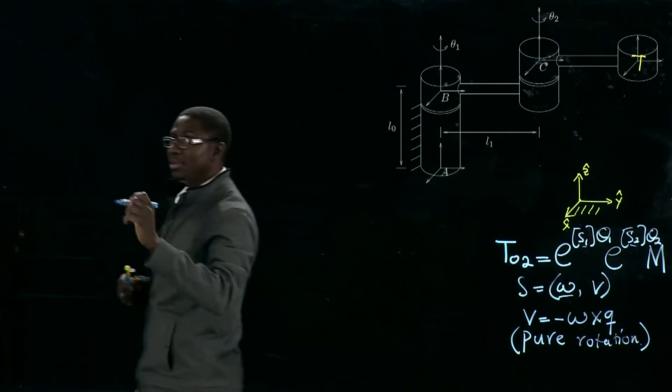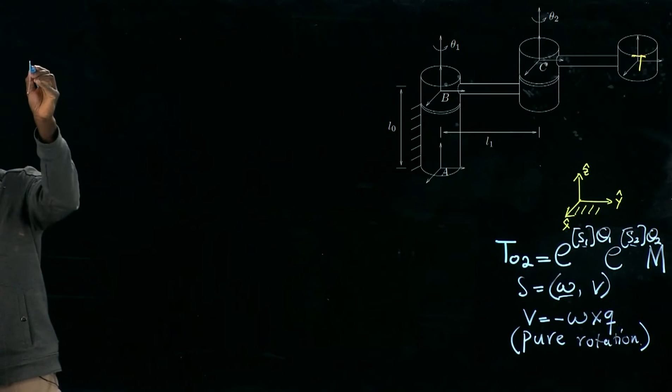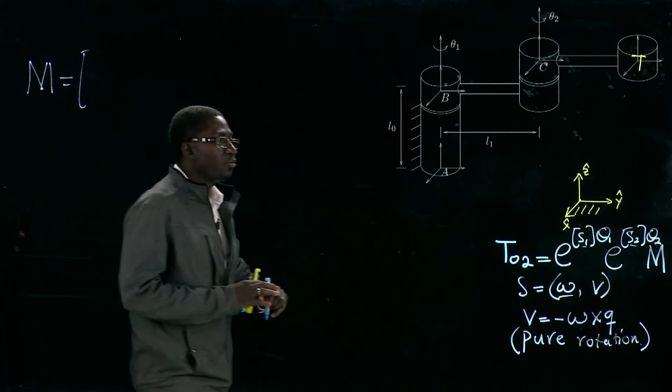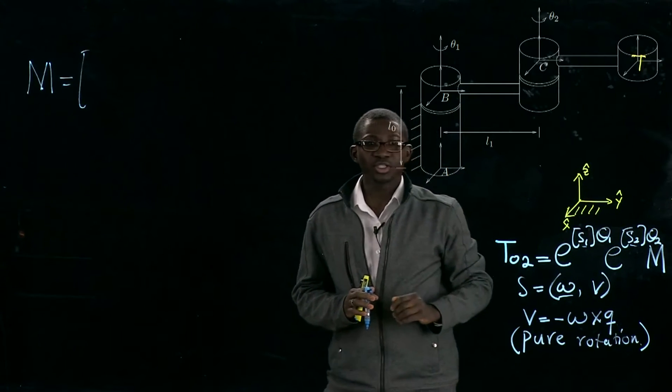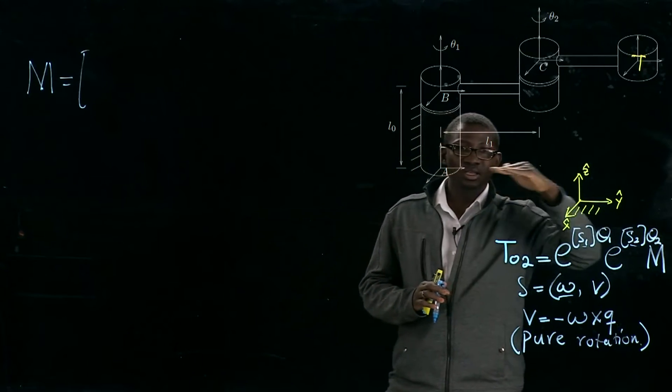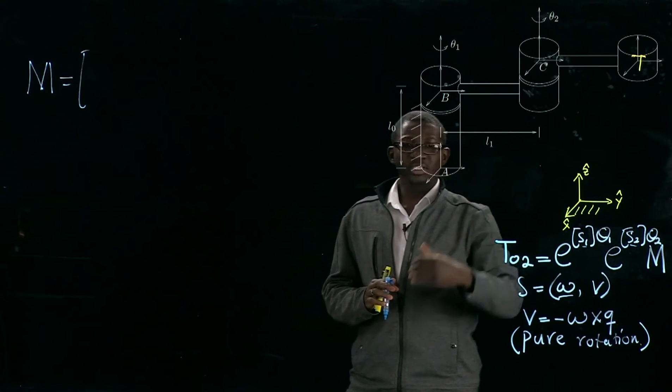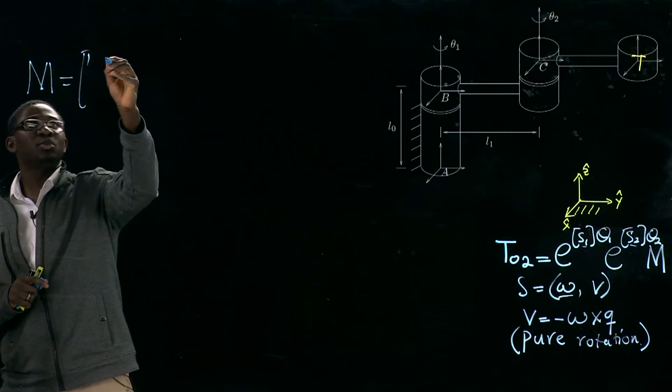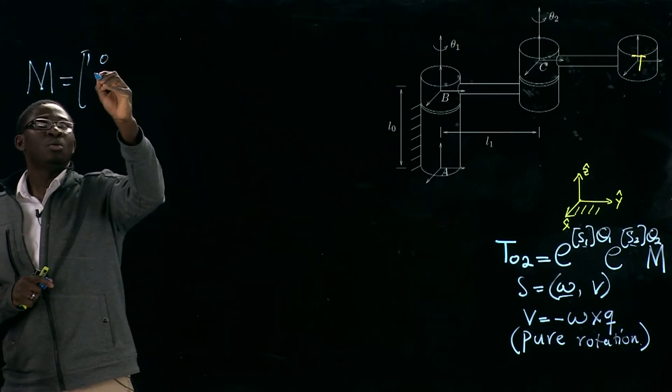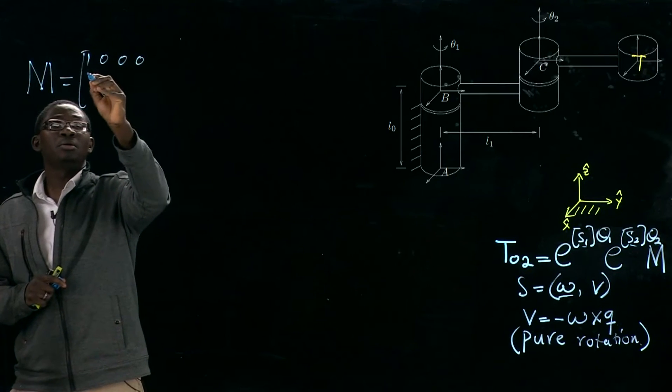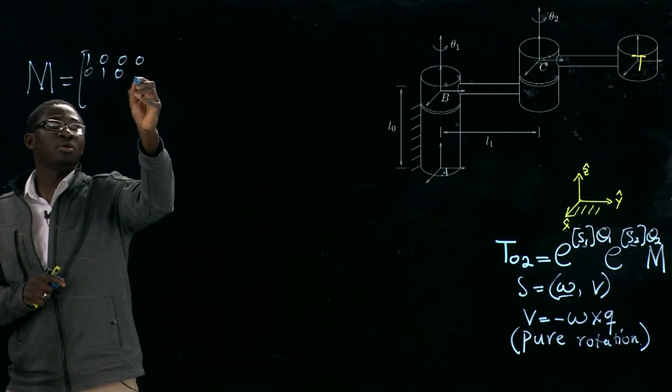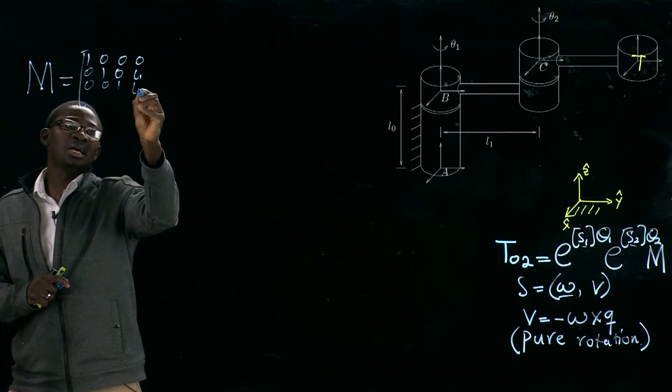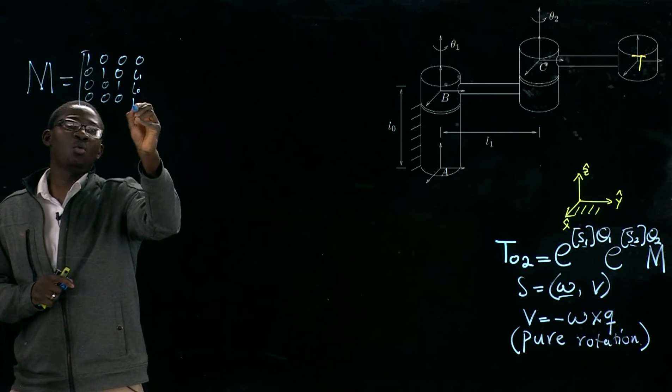In this case, our M, as we know, this is going to be our positive z-axis, positive y-axis, positive x-axis. Our M is going to be [1, 0, 0, 0; 0, 1, 0, L1; 0, 0, 1, L2; 0, 0, 0, 1].